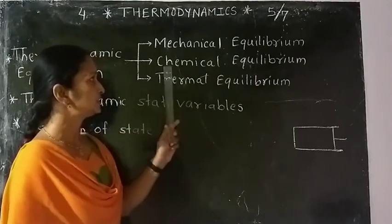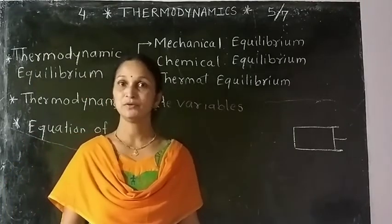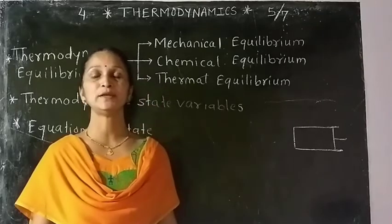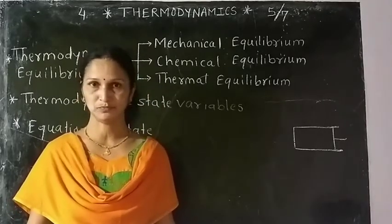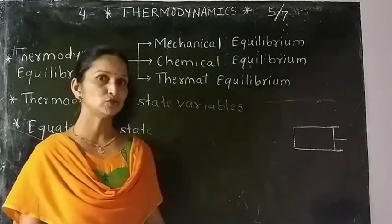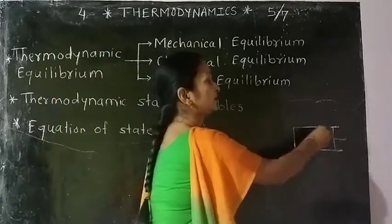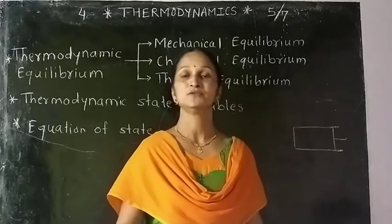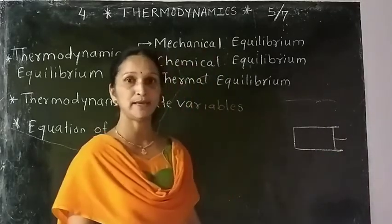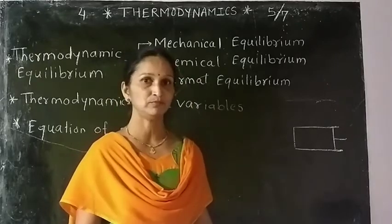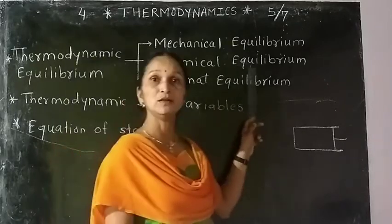The system is said to be in chemical equilibrium if there are no chemical reactions occurring within the system and there is no transfer of matter from one part to another part of the system. The chemical composition is the same throughout the system.